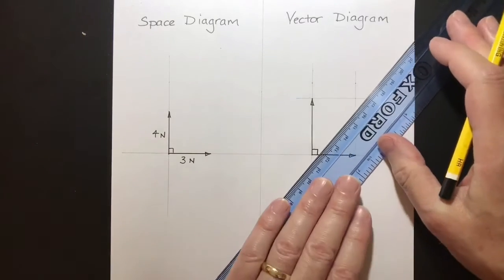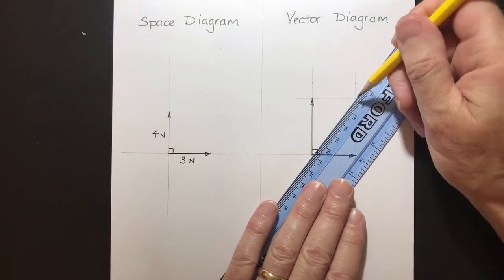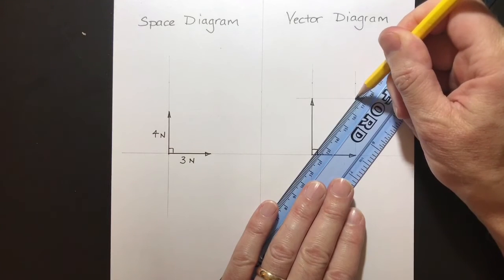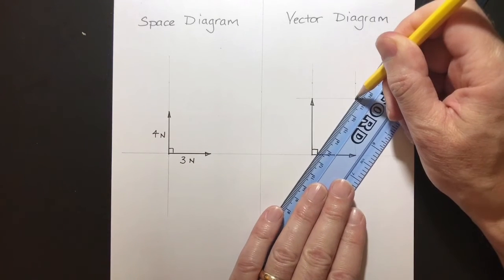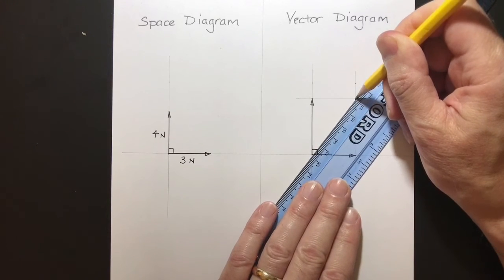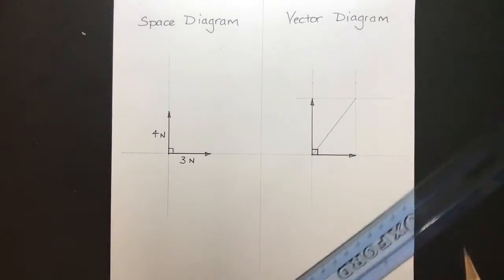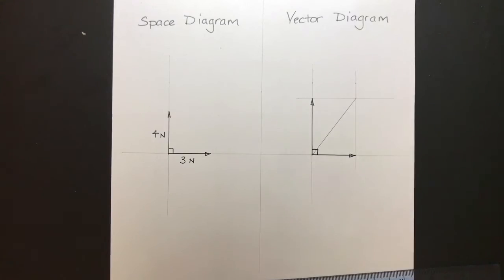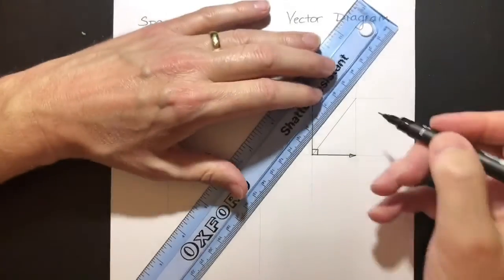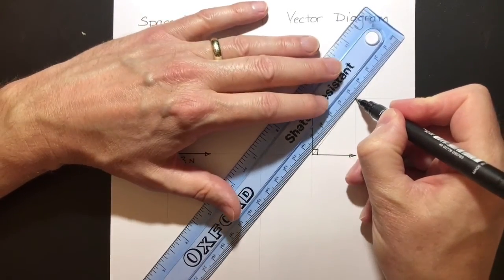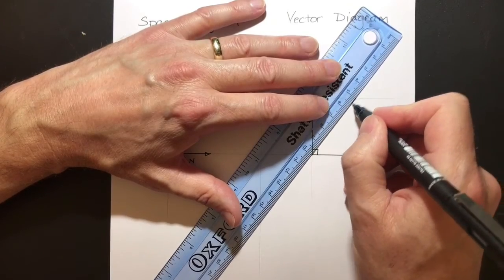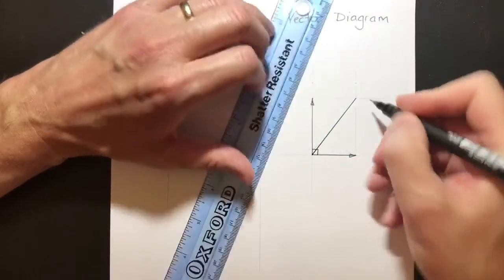We can see that these two parallel lines cross at this point here. Very simply now just join them together. If I place my pencil on that cross and move the rule round to the start point there, I can draw a line. And that is our resultant. There we go. From there down to there. There is our resultant.